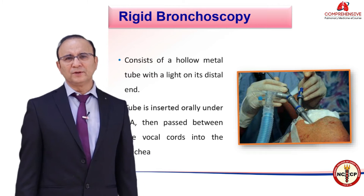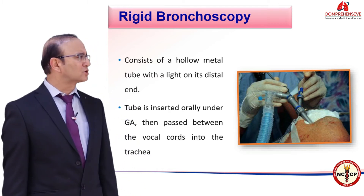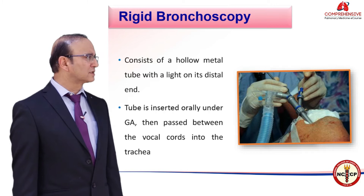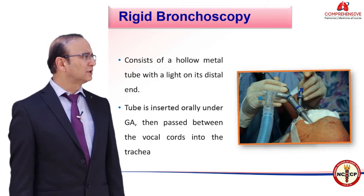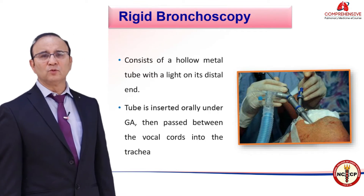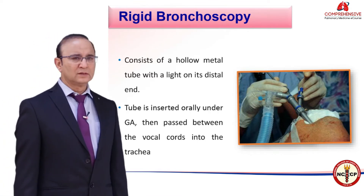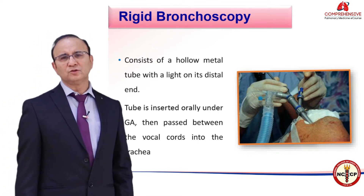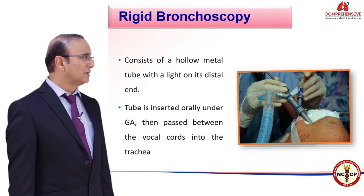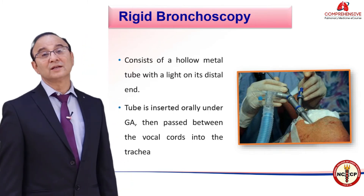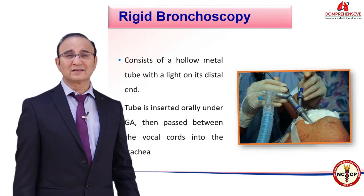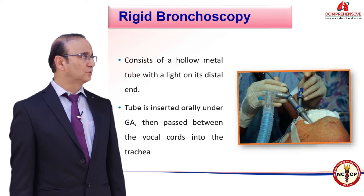The rigid bronchoscopy consists of a hollow metal tube with a light on its distal end. The tube is inserted orally under general anesthesia and then passed between the vocal cords and the trachea. Its large lumen facilitates clearing of secretions and debris, and also helps perform interventional procedures more easily compared to the flexible bronchoscope.